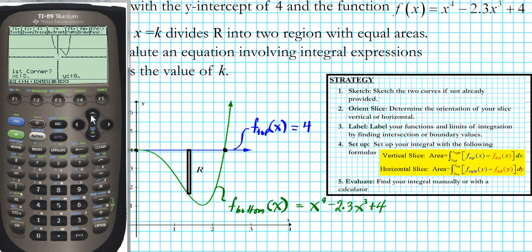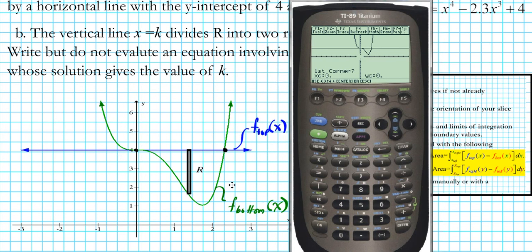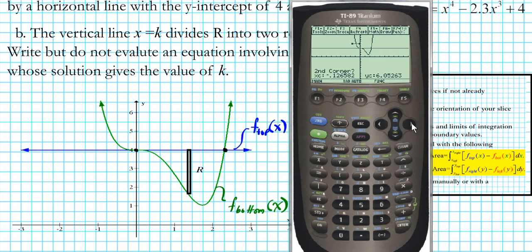It asks you for the upper left corner of the window you'd like to create. We want to move the upper left corner somewhere in the second quadrant, shifted above y equals 4 and to the left of the point of intersection. Press enter. Now move the second corner down and to the right to capture the entire region, extending past the point of intersection. Press enter.